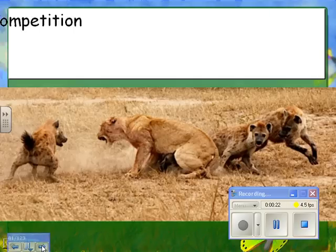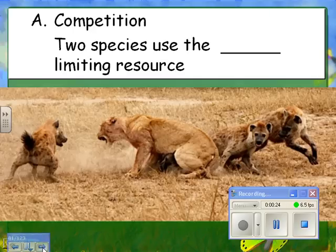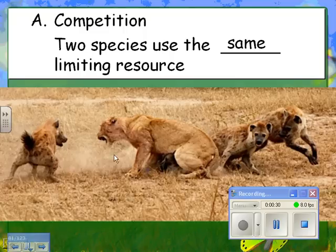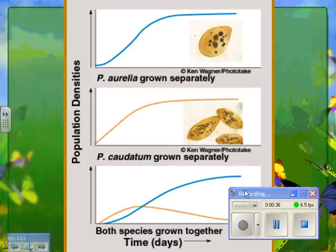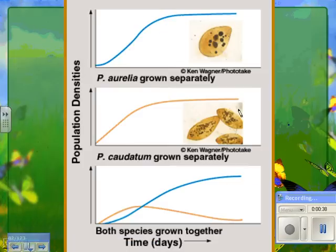Competition occurs when two species use the same limiting resource. For example, hyenas and lions are both competing to eat whatever the lion just killed. Another example: here is Paramecium aurelia grown by itself, and here is P. caudatum grown by itself.